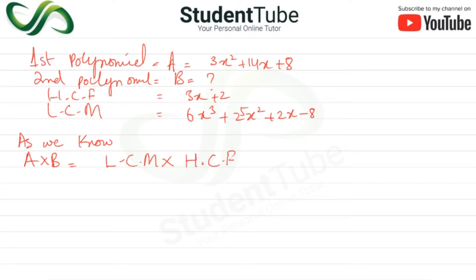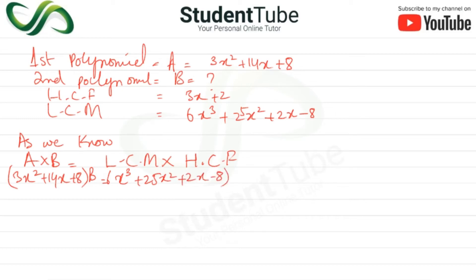So A, which is the first polynomial 3x² + 14x + 8, multiplied by B equals LCM which is 6x³ + 25x² + 2x − 8, multiplied by HCF which is 3x + 2. Therefore B equals (6x³ + 25x² + 2x − 8) divided by (3x² + 14x + 8).